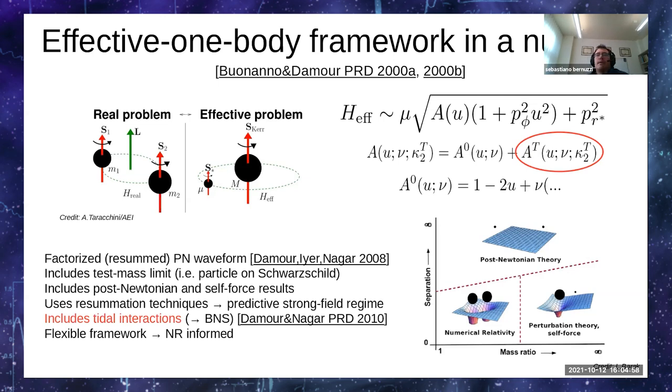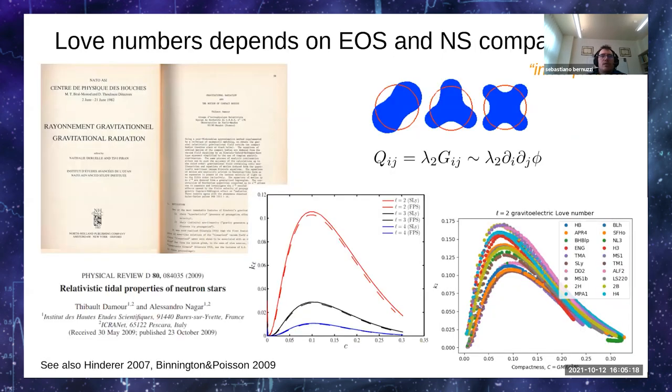The main effect that distinguishes binary neutron stars from binary black holes are tidal interactions, and as already mentioned, these are primarily included as an additive contribution to the EOB radial potential and Hamiltonian. The first step to model tidal interaction is to understand how a spherical neutron star is perturbed or responds to an external gravitational field. This is called the inner problem because it deals with the field structure around the single body and how it is perturbed by the presence of other bodies.